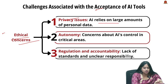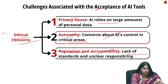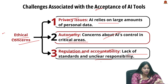Third is ethical concerns — AI relies on large amounts of personal data, raising concerns about how it is collected, stored, and used. There is also anxiety over the level of control AI systems may have in critical areas like healthcare, legal systems, and warfare, where human judgment is traditionally paramount. Additionally, there is lack of global regulation standards, and absence of clear guidelines can lead to hesitancy in adoption.